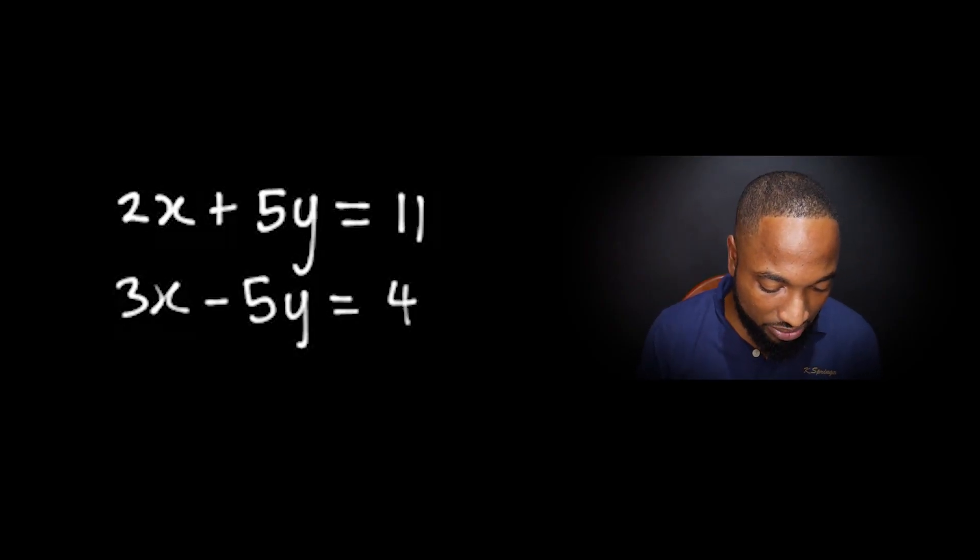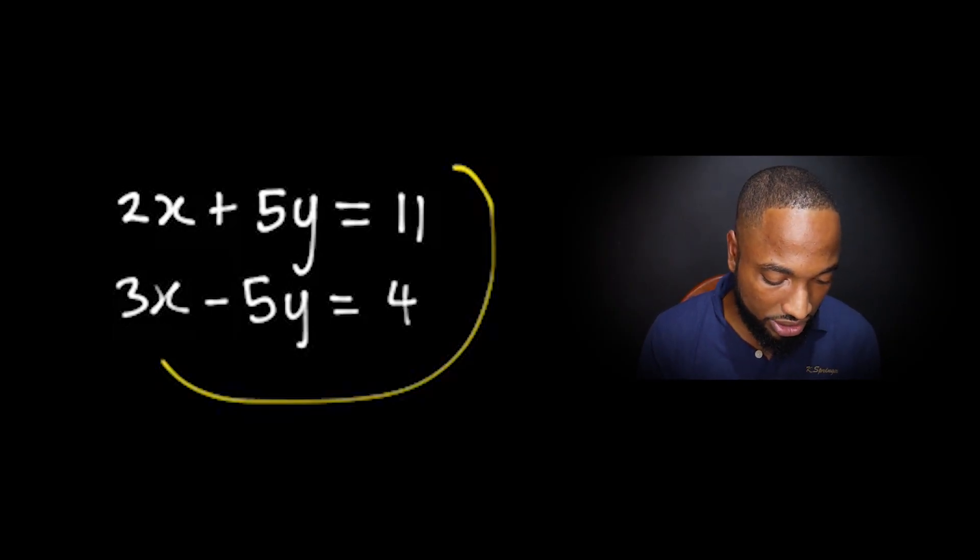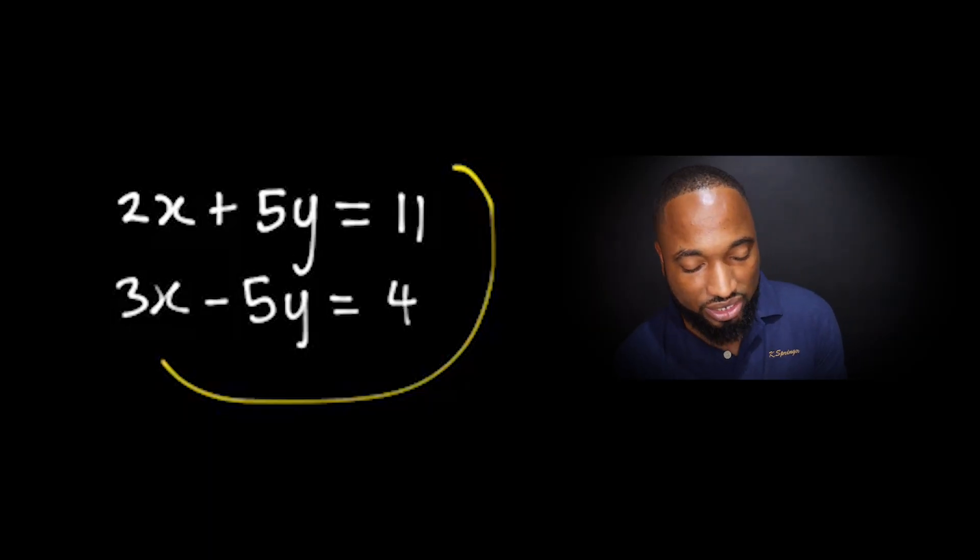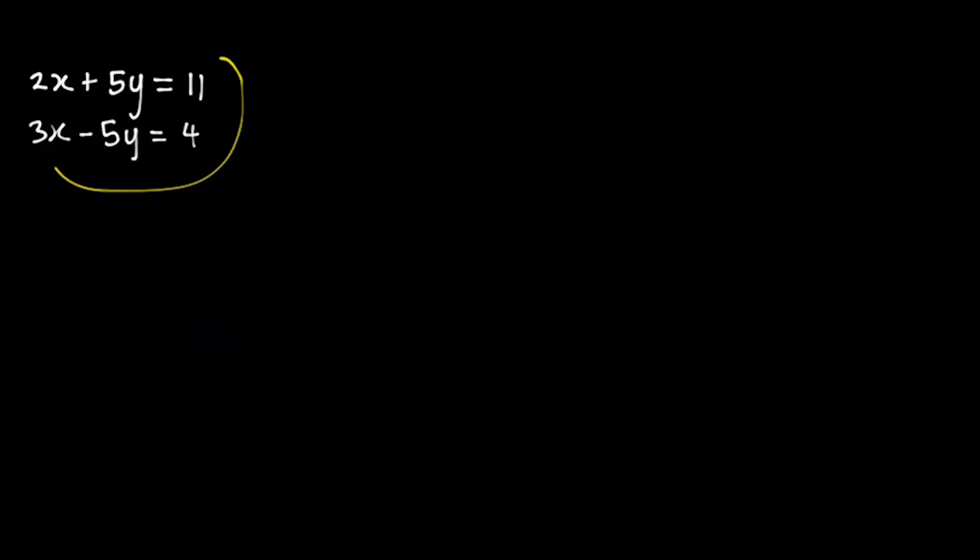Let's get into it. We start off with this little equation here—the example: 2x plus 5y equals 11, which is a system of equations, and 3x minus 5y equals 4. So how do we solve this?